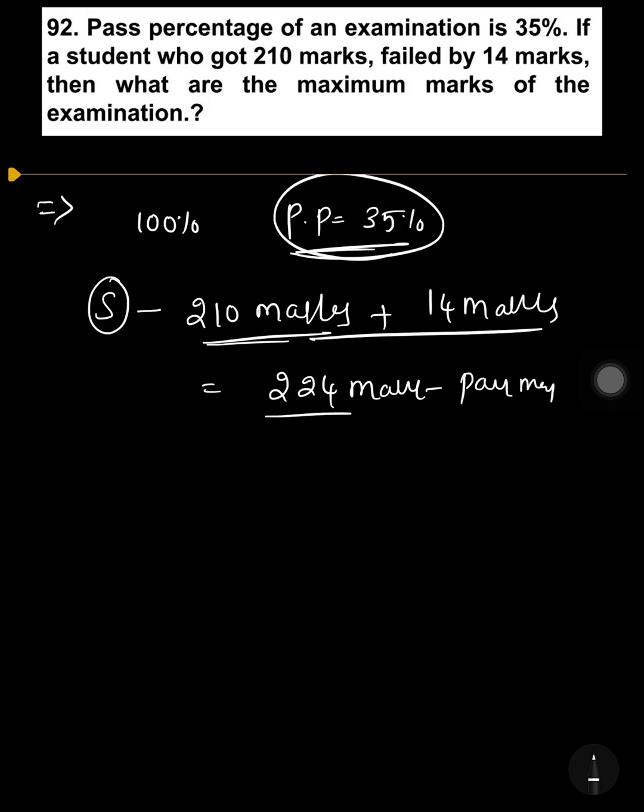Pass percentage 35% is equal to 224 marks. To find the maximum marks of the examination, 100% is equal to how much? 100 times 224 divided by 35.